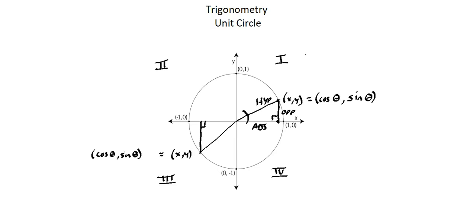In quadrant one, cosine of angle is positive and sine of angle is positive. In quadrant two, the x-coordinate is negative. So cosine of angle is negative. And sine of angle is positive.